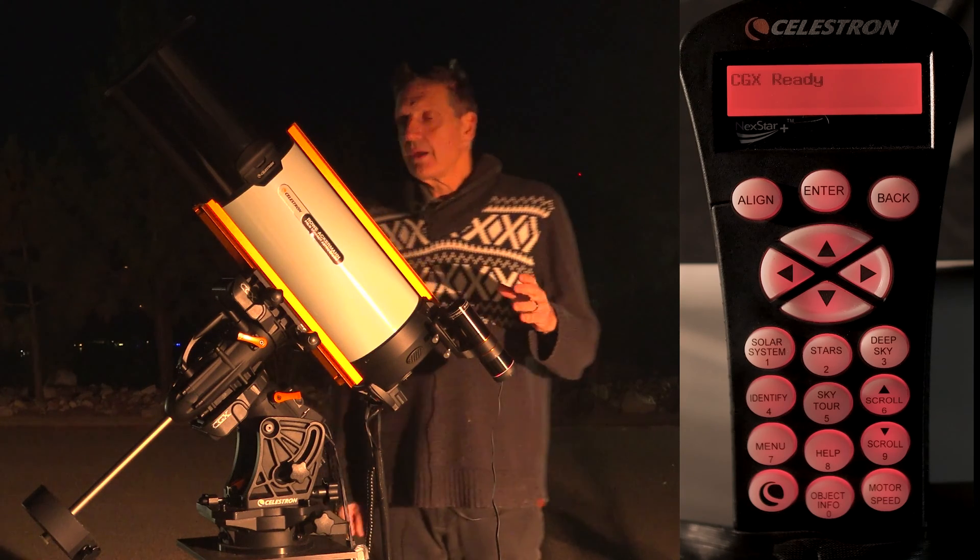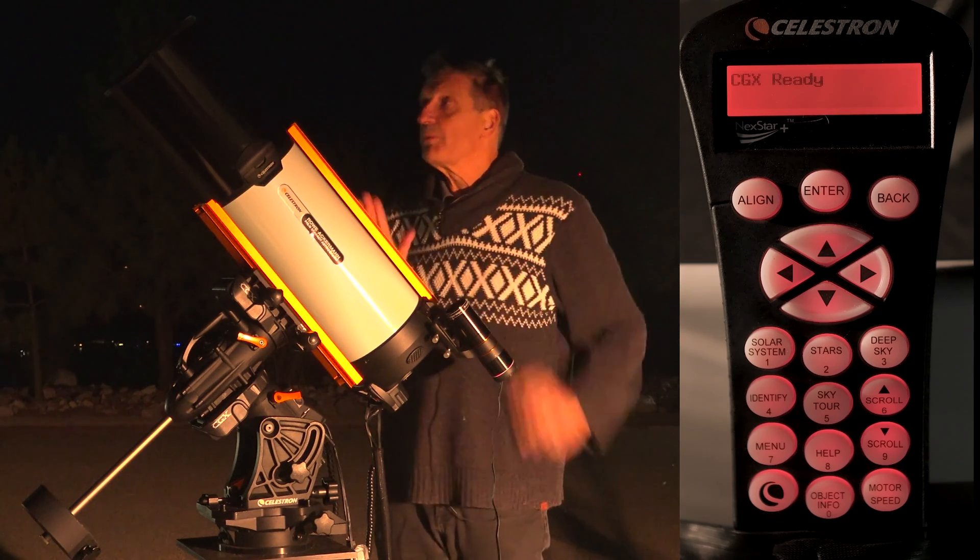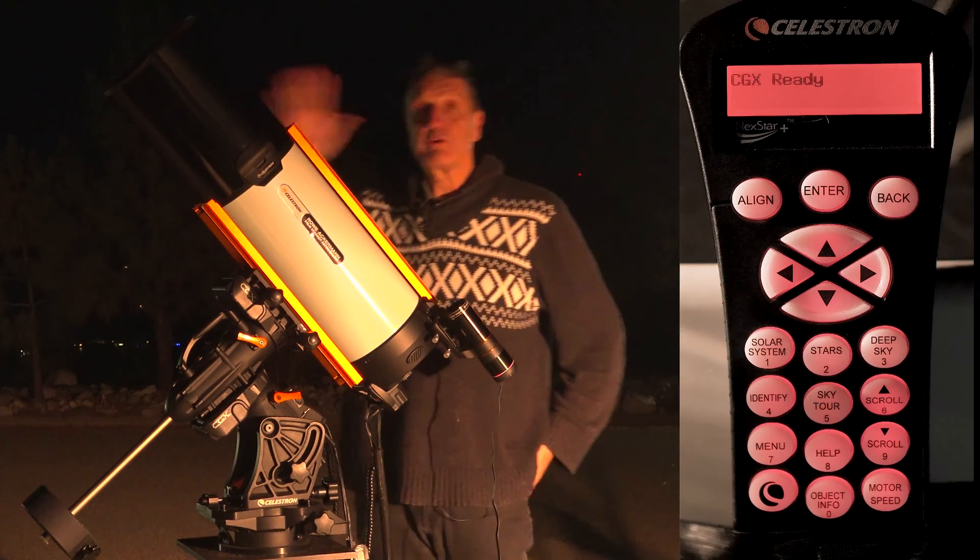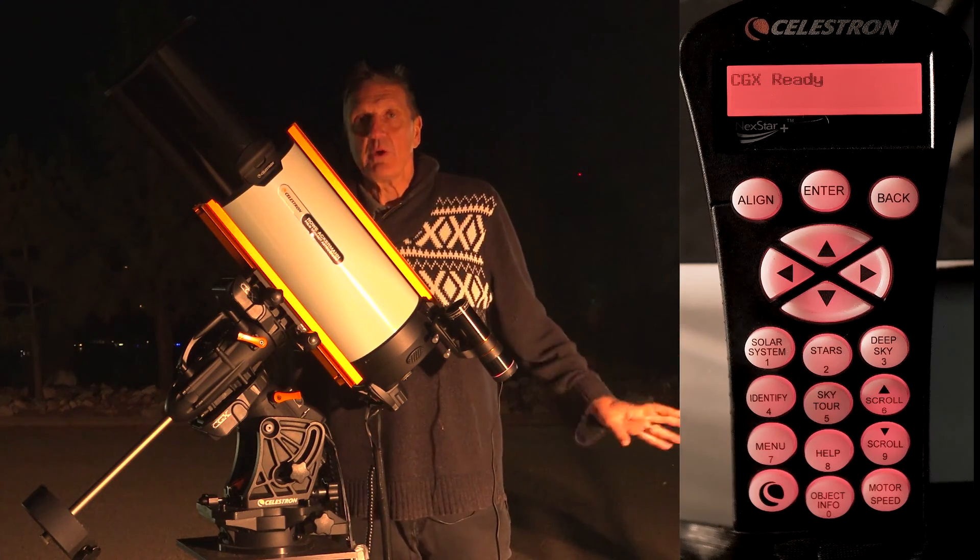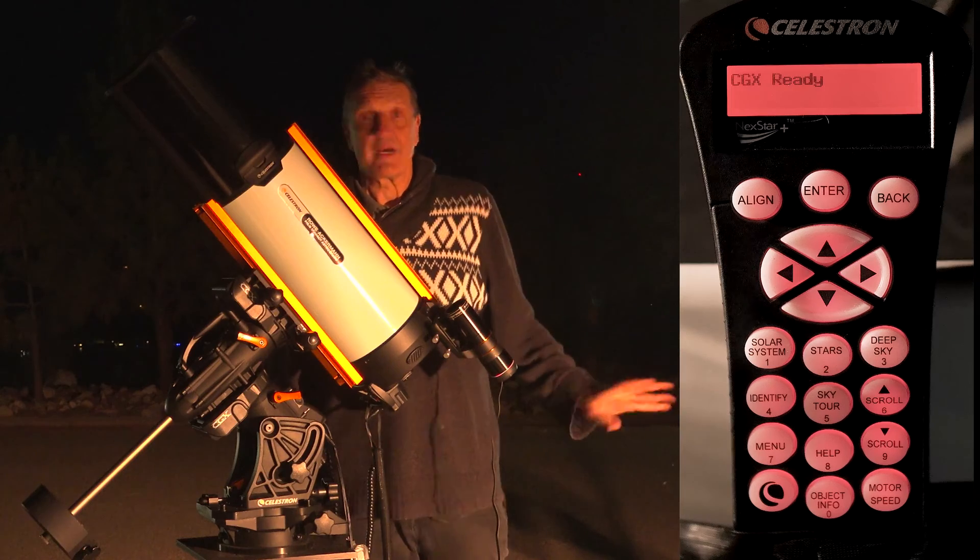It's rather straightforward. I'm going to assume that your telescope is now in the home position, the position of origin, and let's go to the menu and go to the StarSense Autoguider.